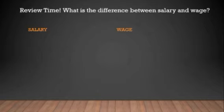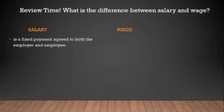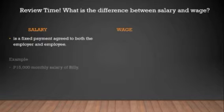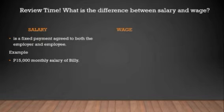What is the difference between salary and wage? Salary is a fixed payment agreed to by both the employer and the employee. For example, 15,000 monthly salary of Billy — no overtime pay, no holiday pay, or no double pay. In other words, salary is a fixed income.